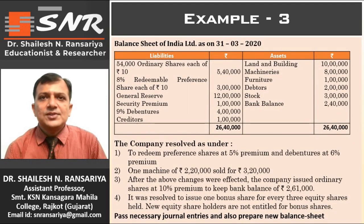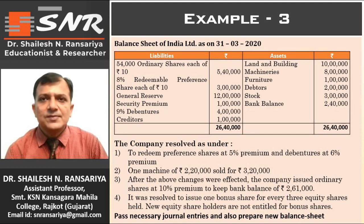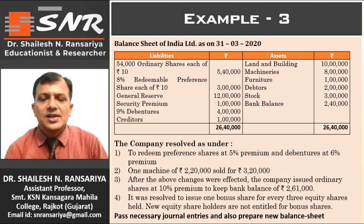The balance sheet of India Limited is as on 31st March 2020. In the balance sheet: ordinary shares, 8% redeemable preference shares Rs. 3,00,000, 9% debentures Rs. 4,00,000, general reserve Rs. 12,00,000, security premium Rs. 1,00,000, creditors Rs. 1,00,000, land and building Rs. 10,00,000, machinery Rs. 8,00,000, furniture Rs. 1,00,000, debtors Rs. 2,00,000, stock Rs. 3,00,000, and bank balance Rs. 2,40,000. Total of the balance sheet: Rs. 26,40,000.